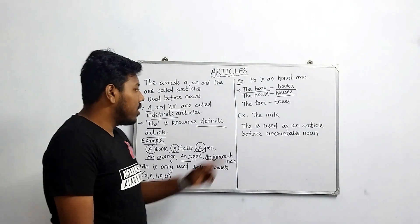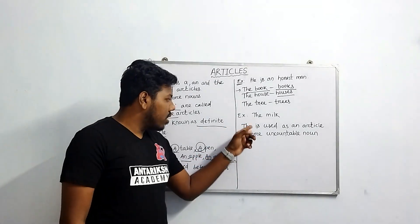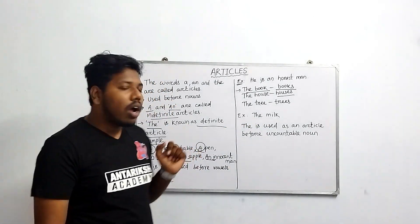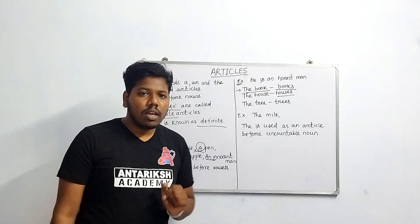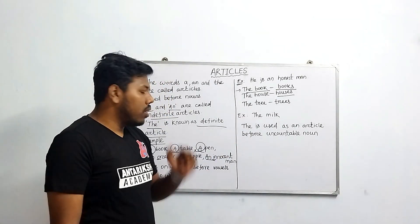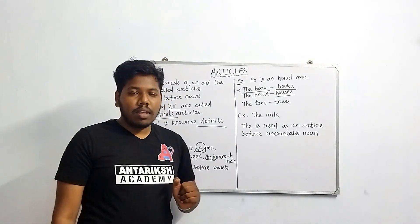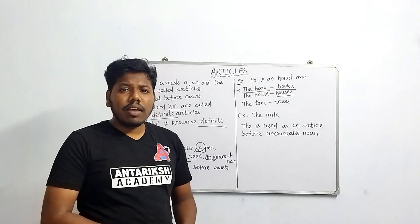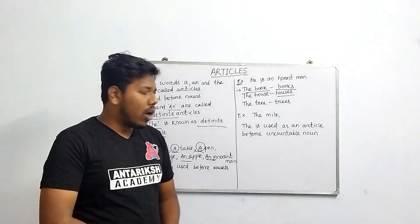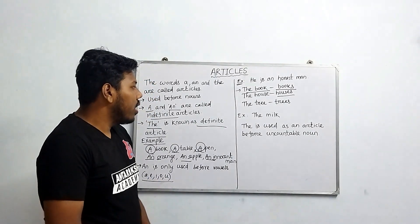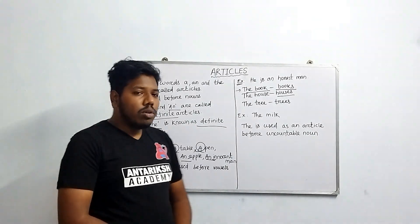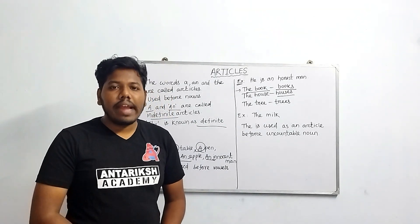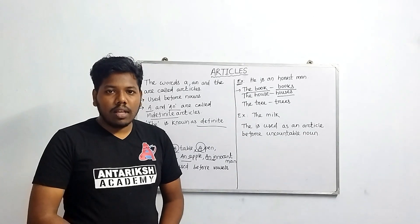'The' is also used as an article before uncountable nouns. For example, 'the milk' — because milk is something we cannot count, and in that case we use 'the', which is the definite article.